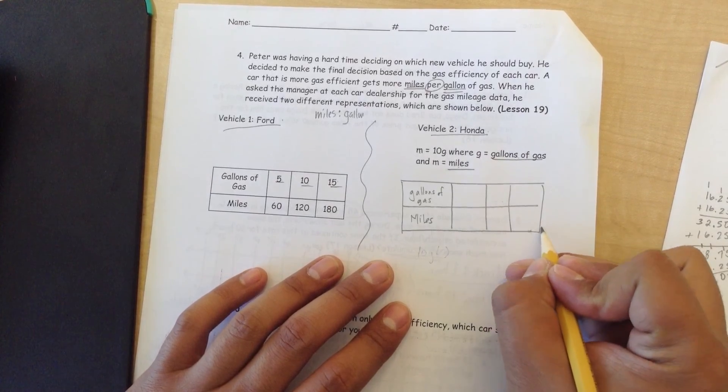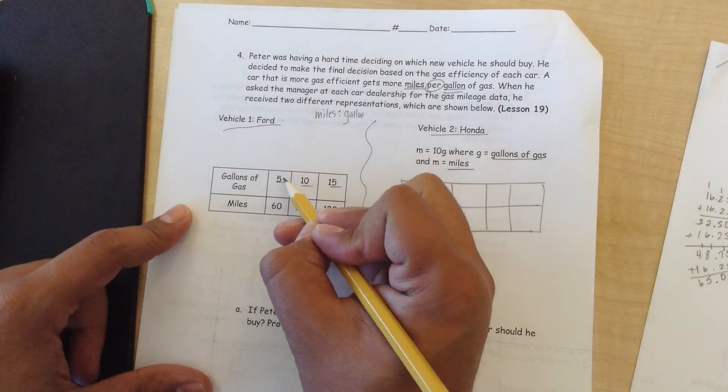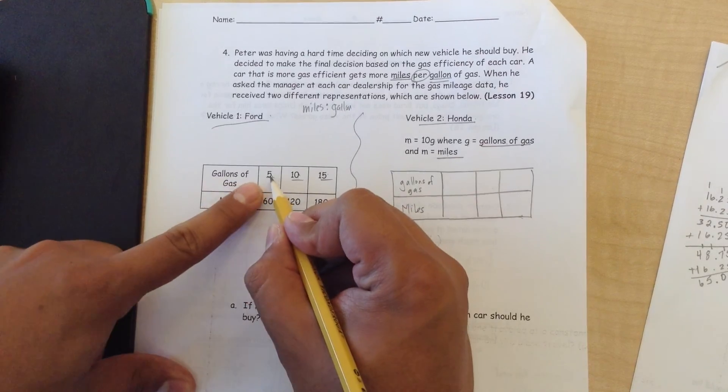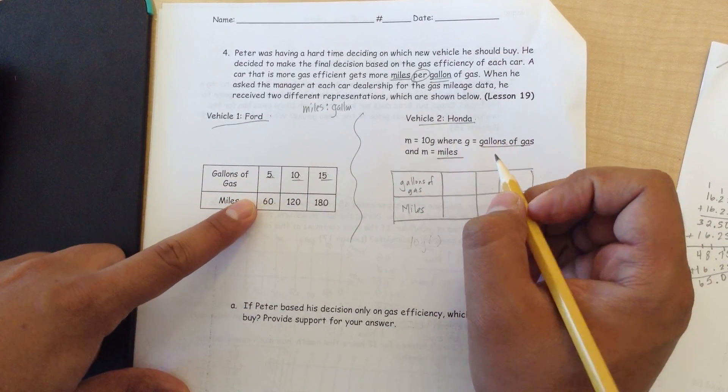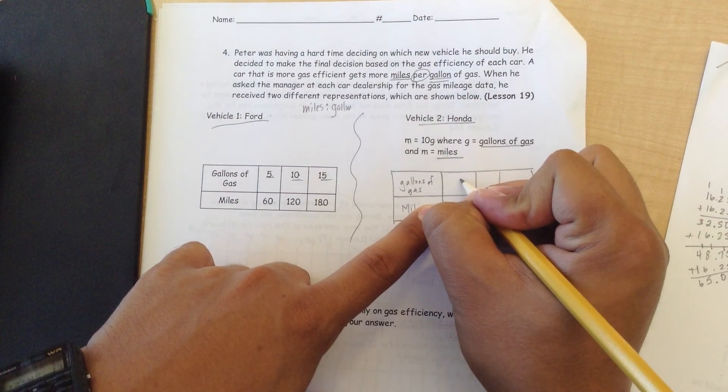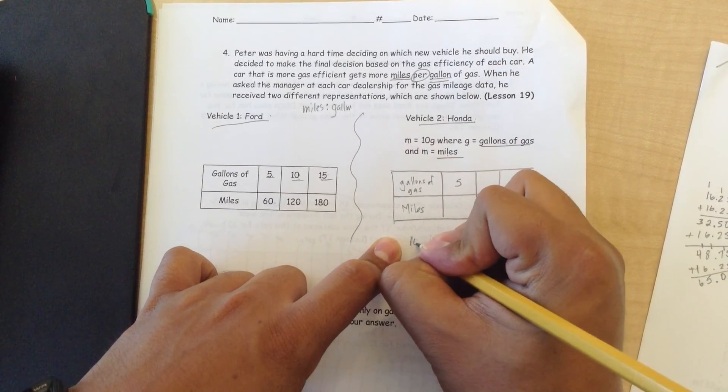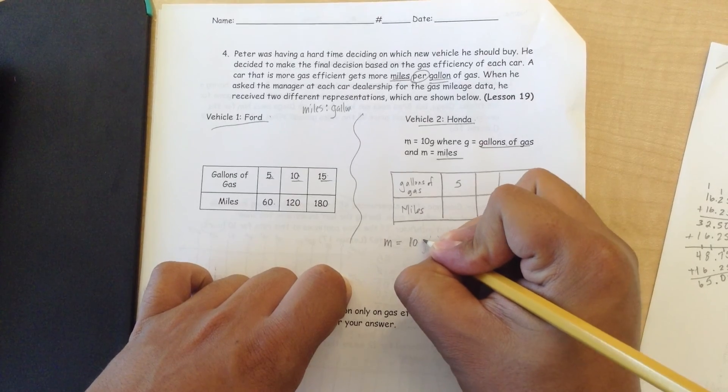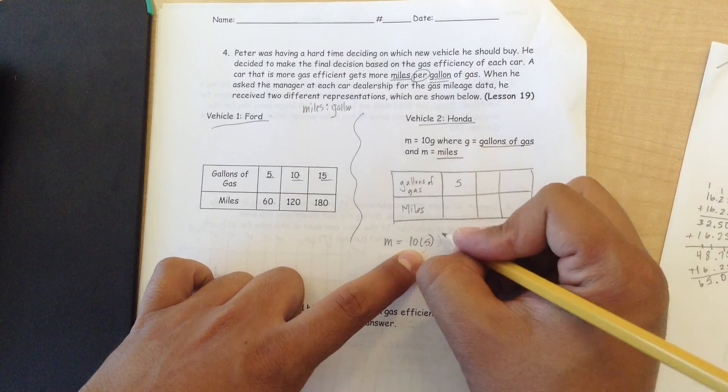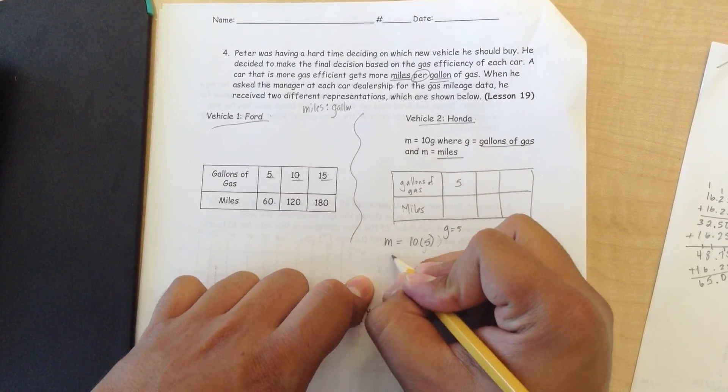What I would suggest to do is, being that we're so used to looking at the table and looking at hard numbers, is plug in these gallons of gas to this formula that it's given us. For example, if we have 5 gallons of gas, how many miles would that be? You get the m equals 10, parenthesis 5, because remember, the 5 is represented by the g. g equals 5, 10 times 5 is 50.